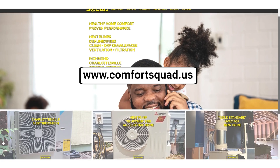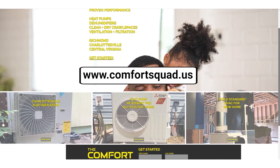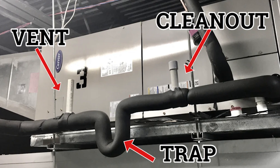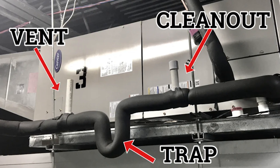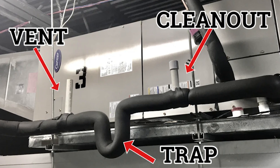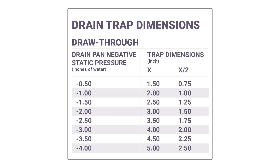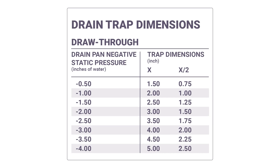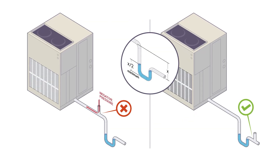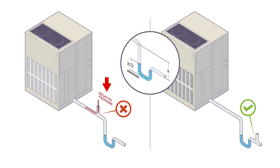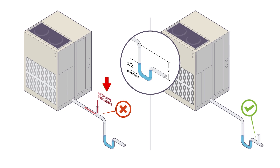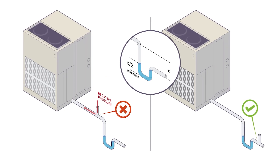We got this question from Steven about condensate trap depth. Steven with the Comfort Squad in Charlottesville, Virginia has a question regarding condensate traps. They've had a number of nuisance calls in the last couple of weeks on retrofit jobs where they couldn't get the static below about one inch. The high static pressure in the air handler is creating a high negative pressure at the drain trap, pulling enough water into the pan to overflow the secondary switch.